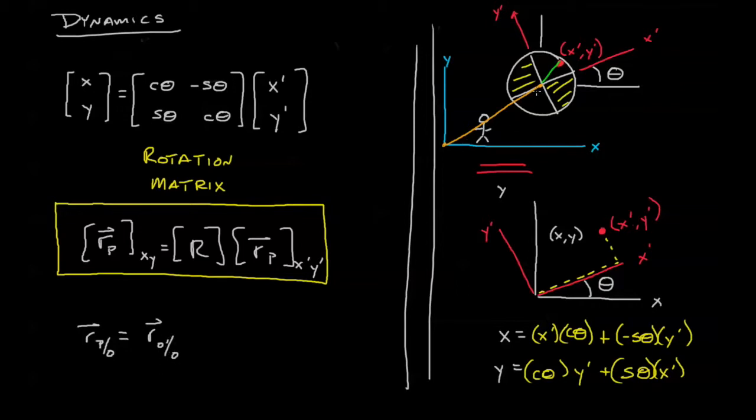We're finding the position of the prime origin compared to the fixed origin plus the position of point P with respect to O prime, and this position is what we focused on in our last video. It told us where point P was in relationship to this rotated coordinate frame. So this is our final position equation that accounts for translation right here and rotation right here.